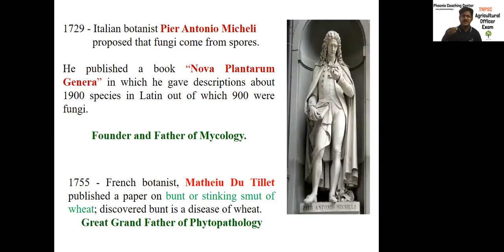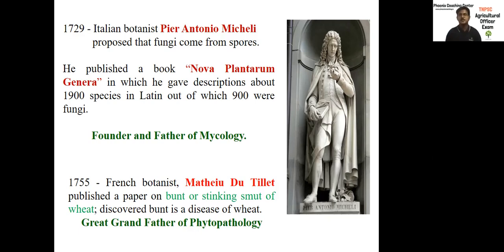After Van Leeuwenhoek, the Italian scientist and botanist P.A. Micheli proposed that fungi come from spores — he openly declared that fungi come from spores in the environment, contrary to the earlier belief that fungi came from the breathing of snakes and animals. He also published the book 'Nova Plantarum Generum,' which contains nearly 1900 species, including 900 species of fungi. Because of his contribution in mycology, he is considered the founder and father of mycology.